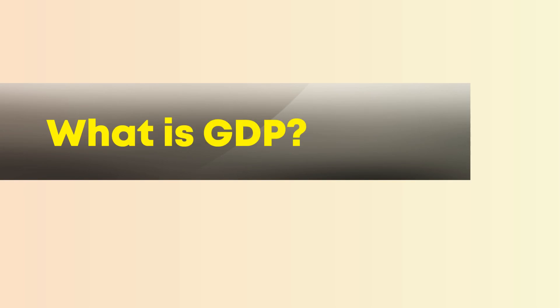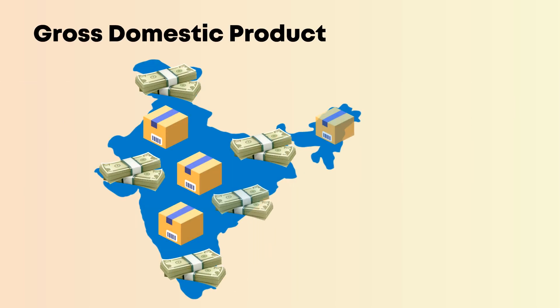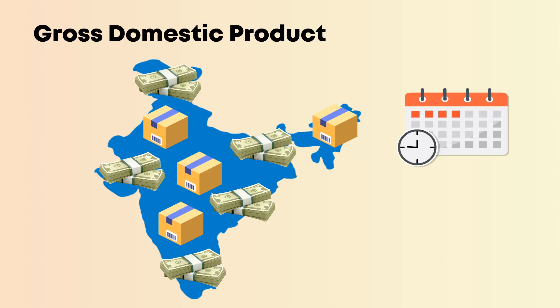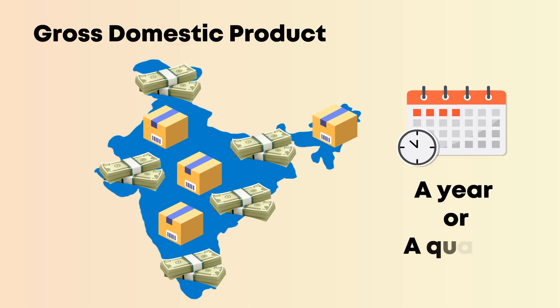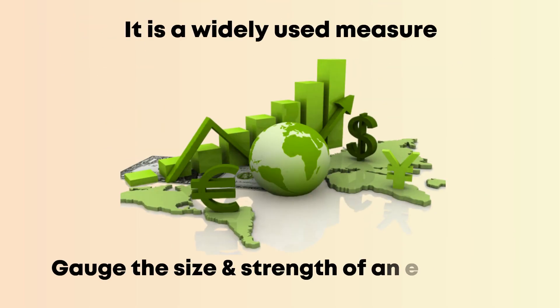What is GDP? Gross domestic product is the total monetary value of all goods and services produced within a country's borders over a specific period, typically a year or a quarter. It is a widely used measure to gauge the size and strength of an economy.